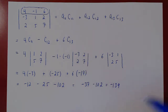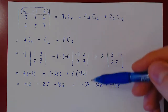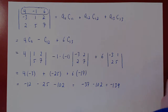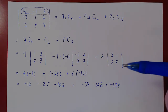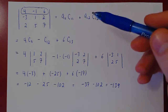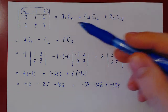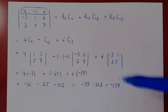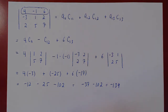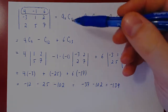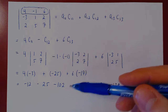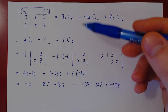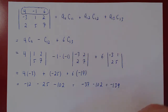The determinant is negative 139, obtained directly by cofactor expansion. But this is too much work. We can do much better if we use row or column operations to introduce some zeros, and go from finding three cofactors to only one. Let's get some zeros in here.